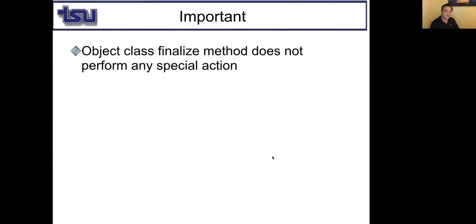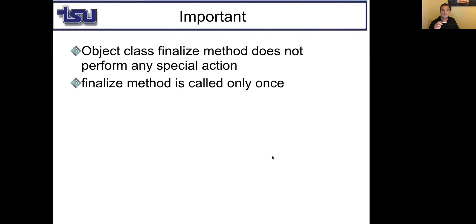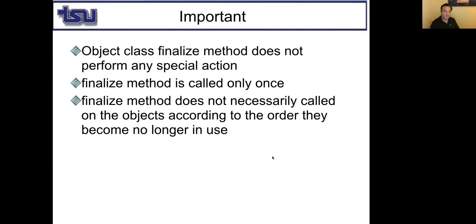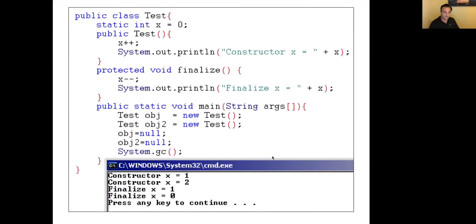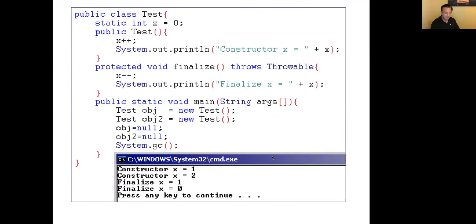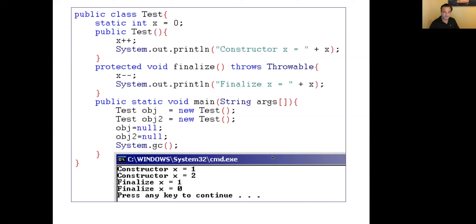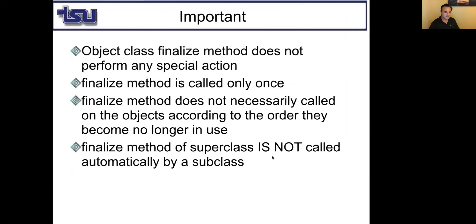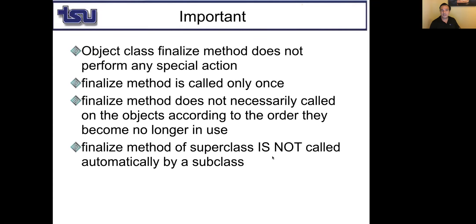The finalize method of a superclass is not called automatically by a subclass. We know that a subclass constructor automatically calls the superclass constructor, but for finalize this is not the case — finalize of a subclass object does not automatically call finalize of its superclass object.